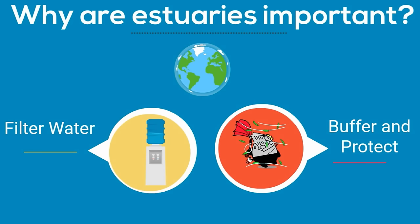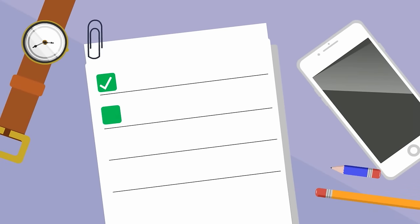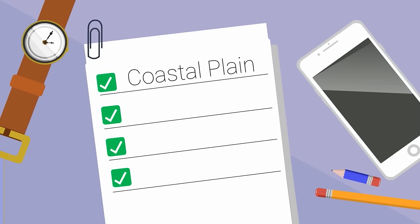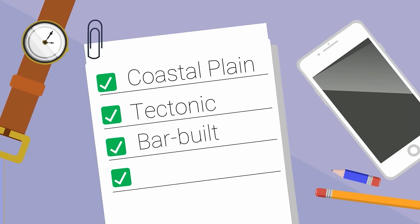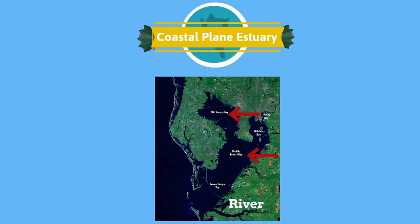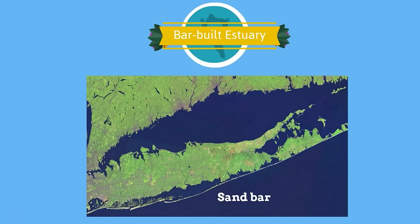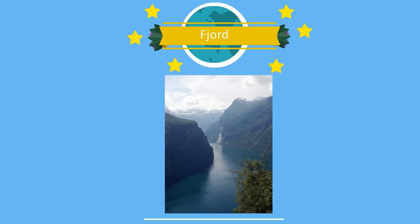Estuaries can be classified according to their geological features. The classifications include coastal plain estuaries, tectonic estuaries, bar-built estuaries, and fjords. Coastal plain estuaries look like valleys with gentle sloping bottoms, and their depth increases towards the river's mouth — Tampa Bay in the US is an example. Bar-built estuaries are formed when sand bars build up along the coastline and partially cut off the waters behind them from the sea. Fjord estuaries are narrow with steep sides and are usually straight and long.